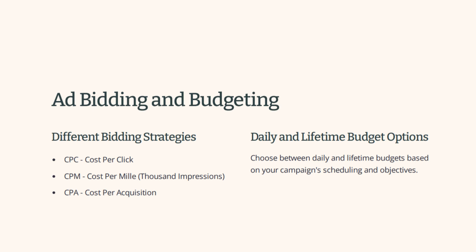With CPM, every thousand eyeballs that land on your ad is how you're billed. CPA — cost per acquisition — means you've got a lead. It's a higher expense but you're getting very high-intent leads with the intent to buy. There are also lifetime budgets, so know the difference between spending per day and spending over a lifetime — it's very important not to confuse the two.